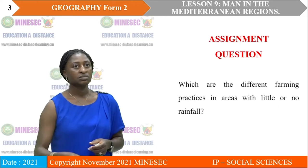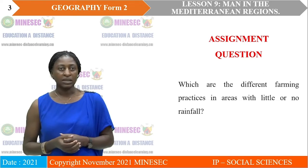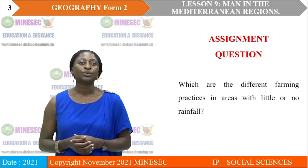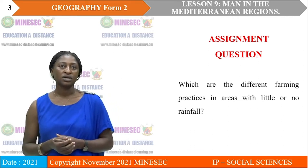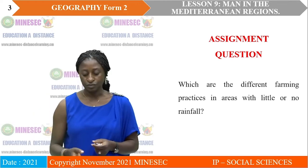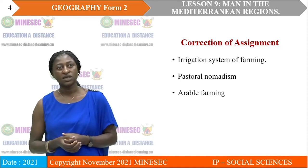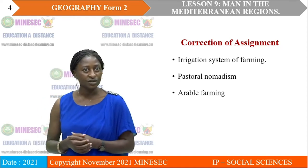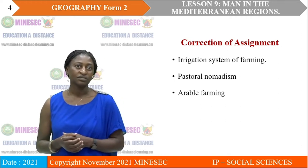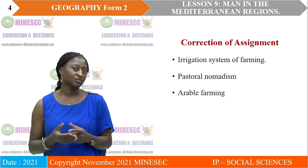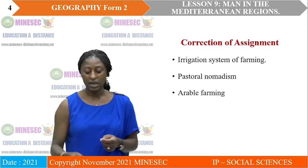But before we start our lesson, let's look at our assignment from the last class. Question: which are the different farming practices in areas with little or no rainfall? We have a collection of our assignment answers: we have irrigation system of farming, we have pastoral nomadism, and we have arable farming. We saw all these different farming systems in our last lesson.